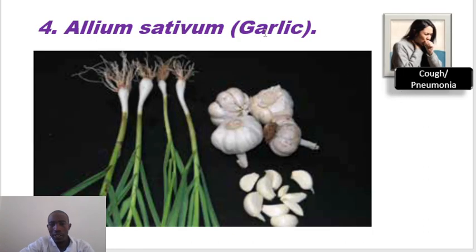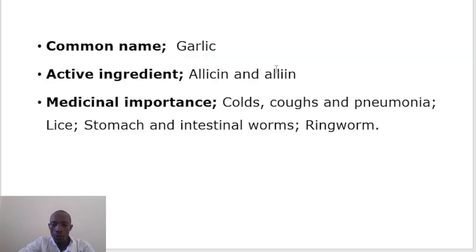The other common plant is Allium sativum, which is garlic, and it's used to treat cough or cold signs and pneumonia. Garlic contains two compounds: Alliin and Allicin. It's also used to treat ringworms and some intestinal worm infections. Garlic also provides immunity.